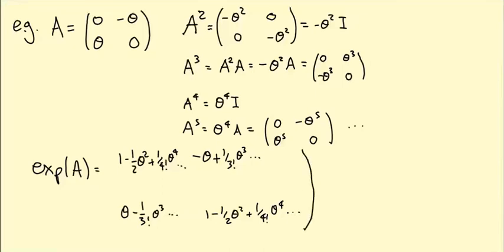What we've got here is a matrix whose entries are power series, and they're actually familiar power series. On the diagonal, the two power series we have are the same, and they're both the Taylor series of cos θ. On the off diagonal, in the bottom left, we have θ - 1/3! θ³..., that's the power series of sin θ. And in the top left, we just have -sin θ.